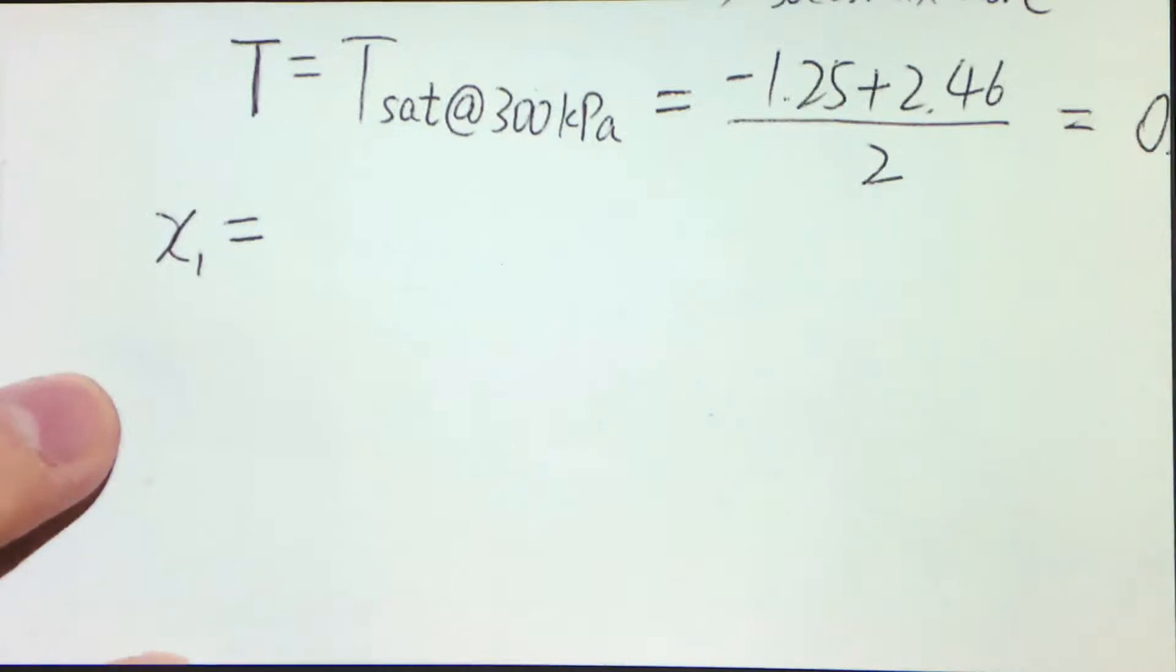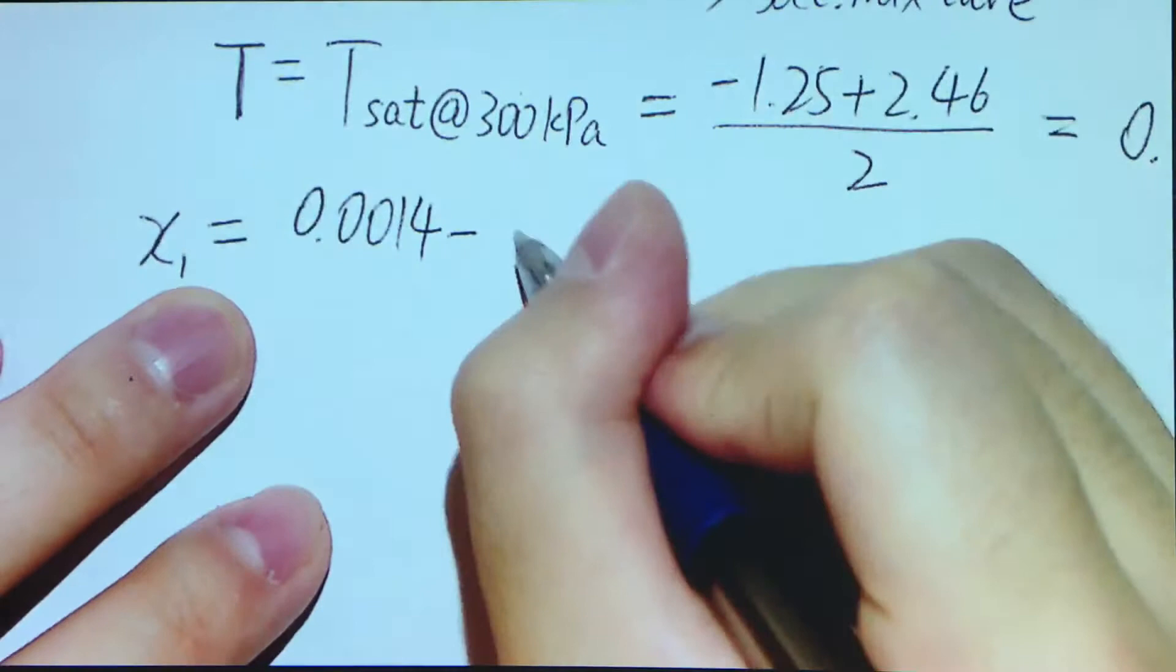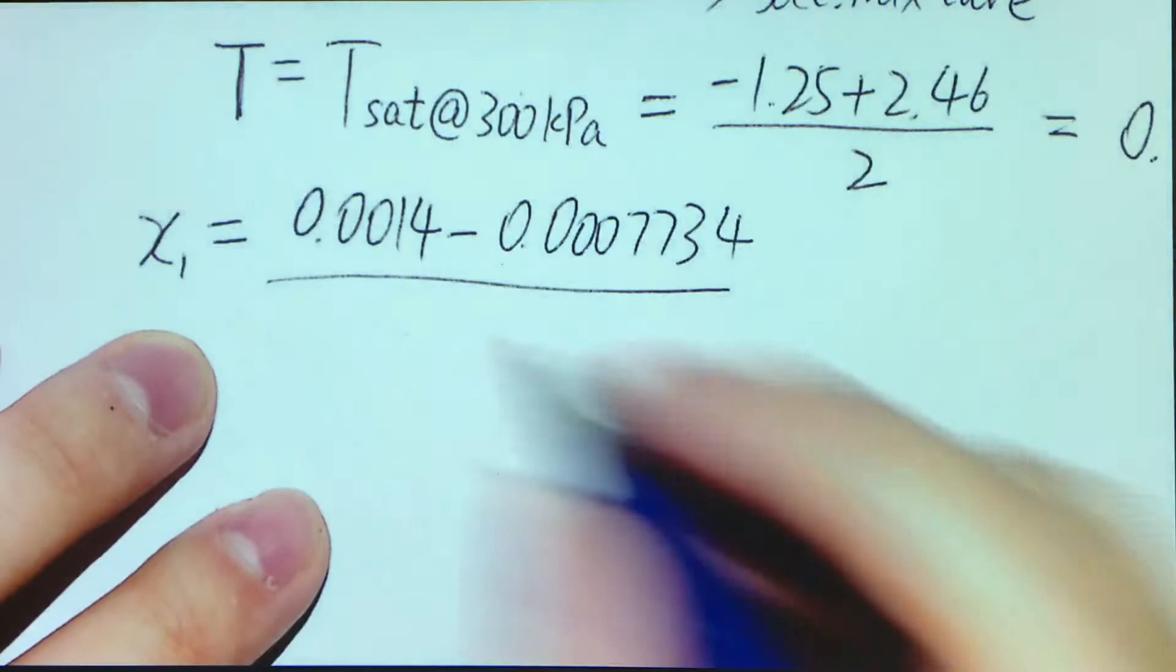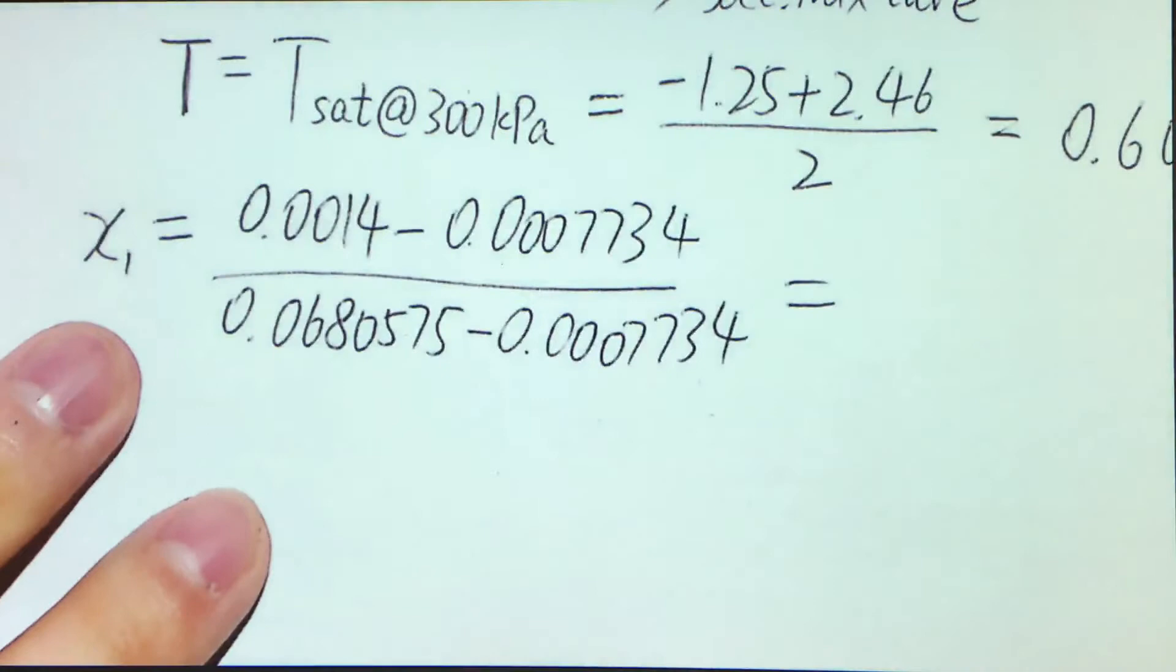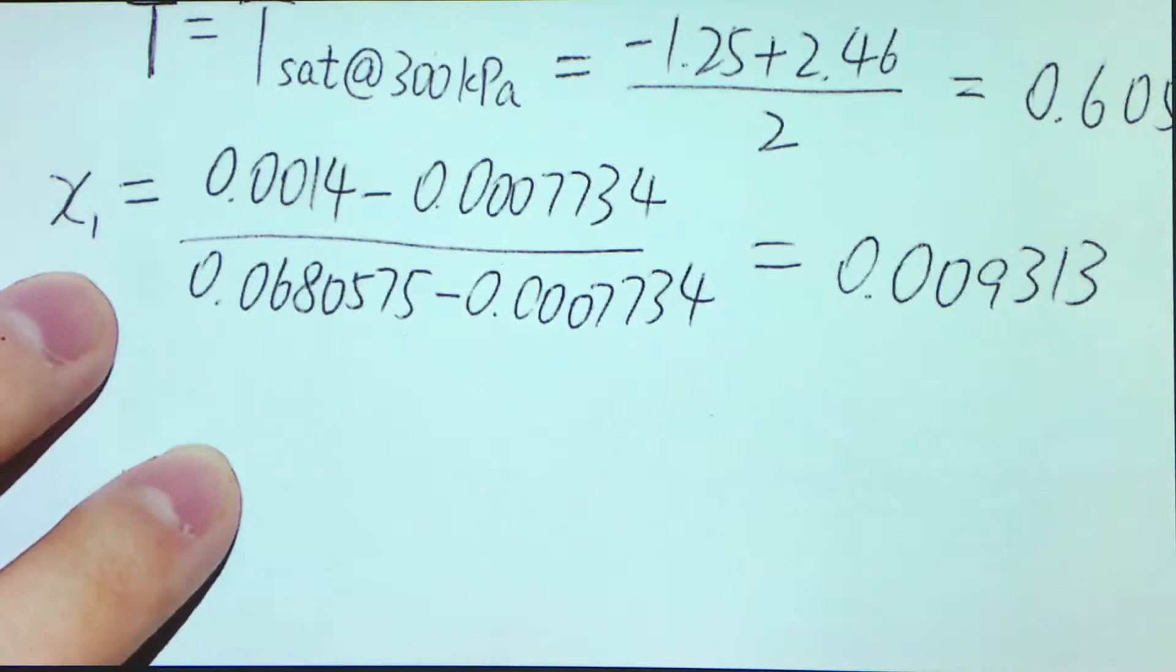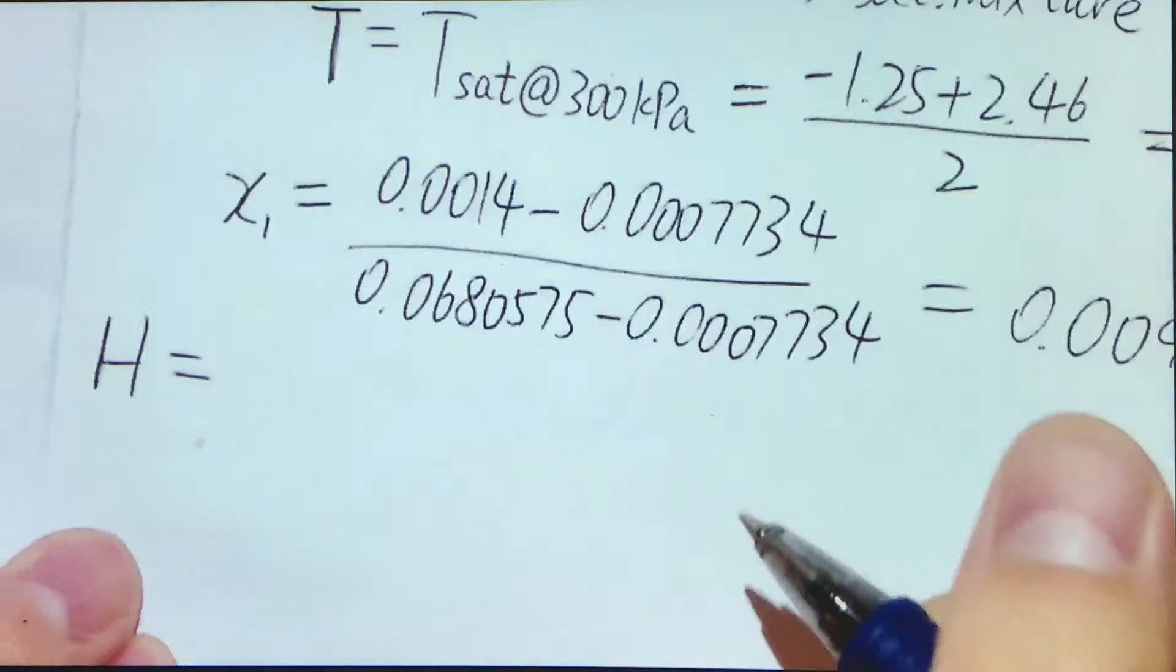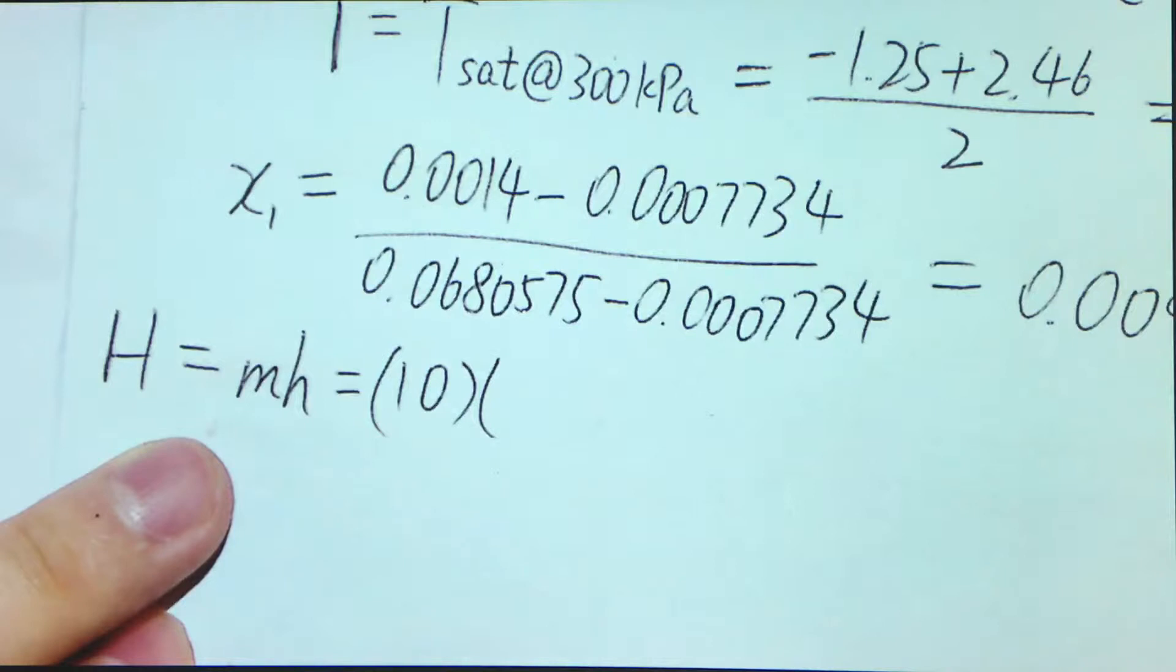So we first calculate the quality. So what's the quality? Remember, it's equal to v minus Vf divided by Vfg. So we have 0.0014 minus 0.00007734 divided by 0.0680575 minus 0.00007734. So we can get the quality at the first state, 0.009313. And we can get the enthalpy. We need to know the total enthalpy. So the total enthalpy is equal to mh. So the m is the total mass, 10.